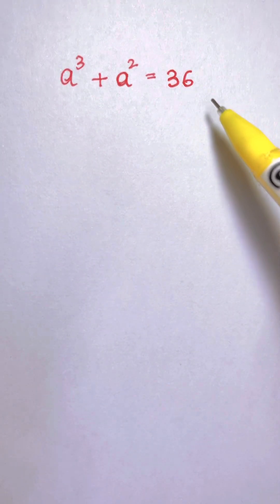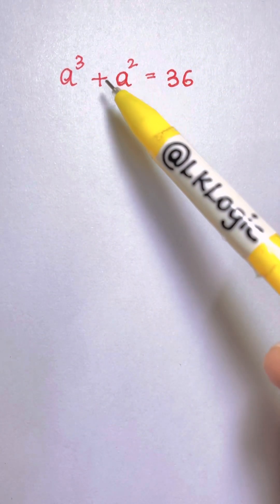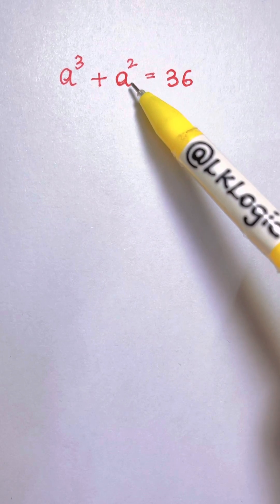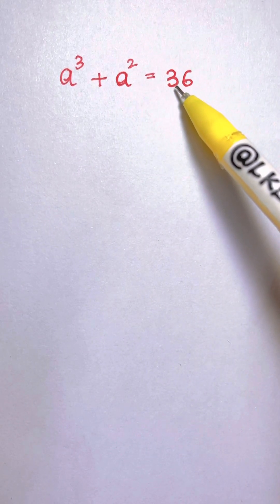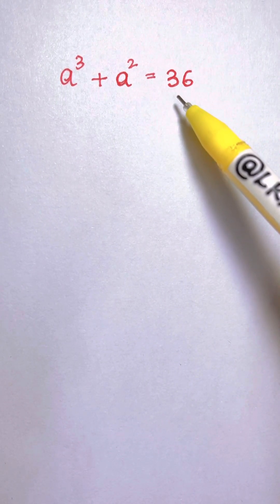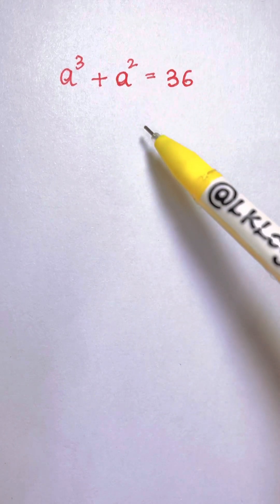How would you solve this equation? It says a³ + a² = 36. Here you have variables on one side and on the right hand side you have a constant. So how would you do it?